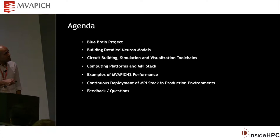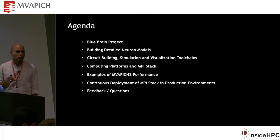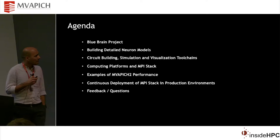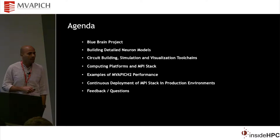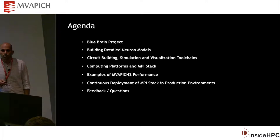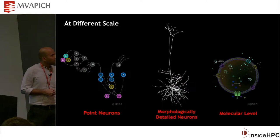This is the brief agenda for the talk. I will briefly describe what the BlueBrain project is. I assume most of the people here are not from the computational neuroscience domain, so I'll briefly describe what we are doing, what it means to build the digital neuron model, what computing platforms we are using, how we are using the MPI stack, some examples of how MVAPICH2 is helping us, and how we deploy the MPI stack in production. And there will be some slides about feedback and possible questions.